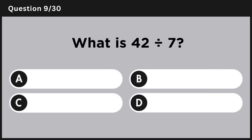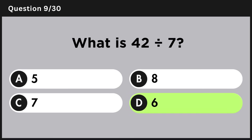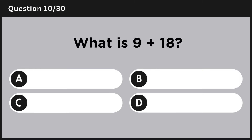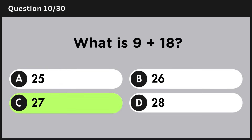What is 42 divided by 7? Answer D: 6. What is 9 plus 18? Answer C: 27.